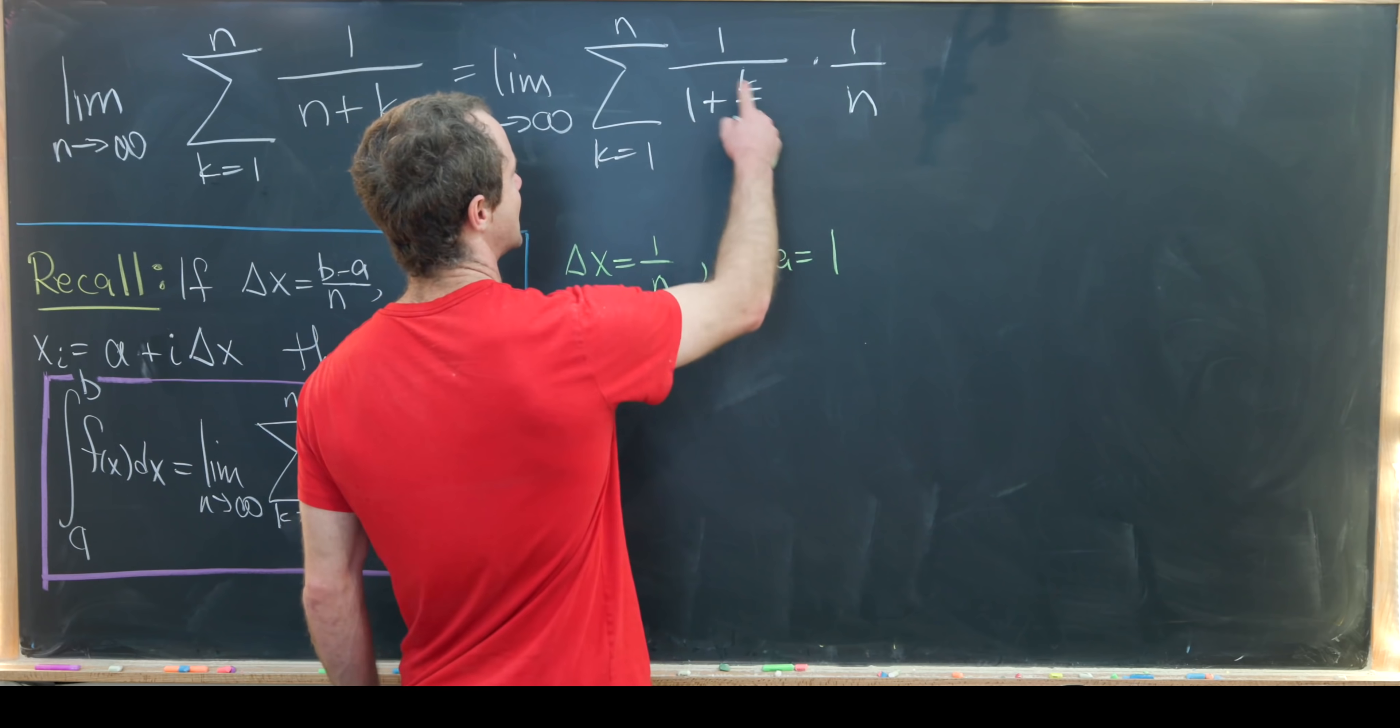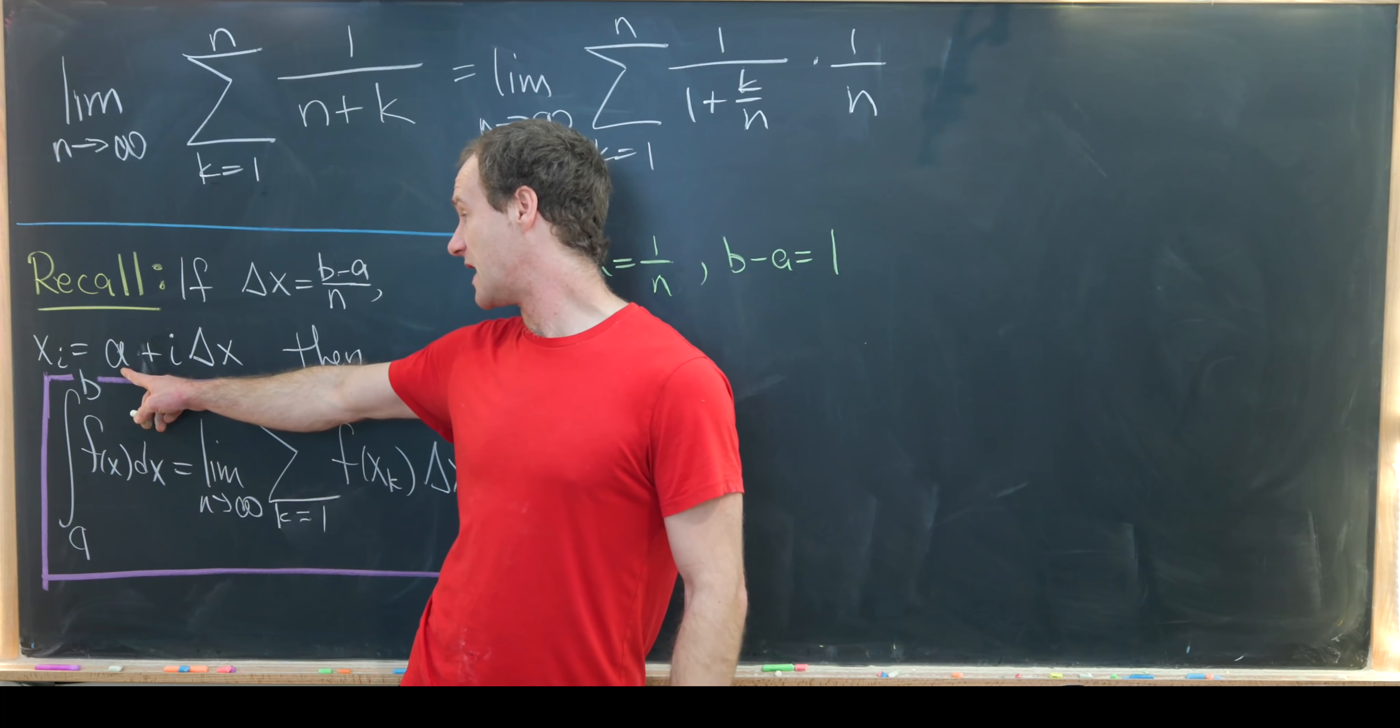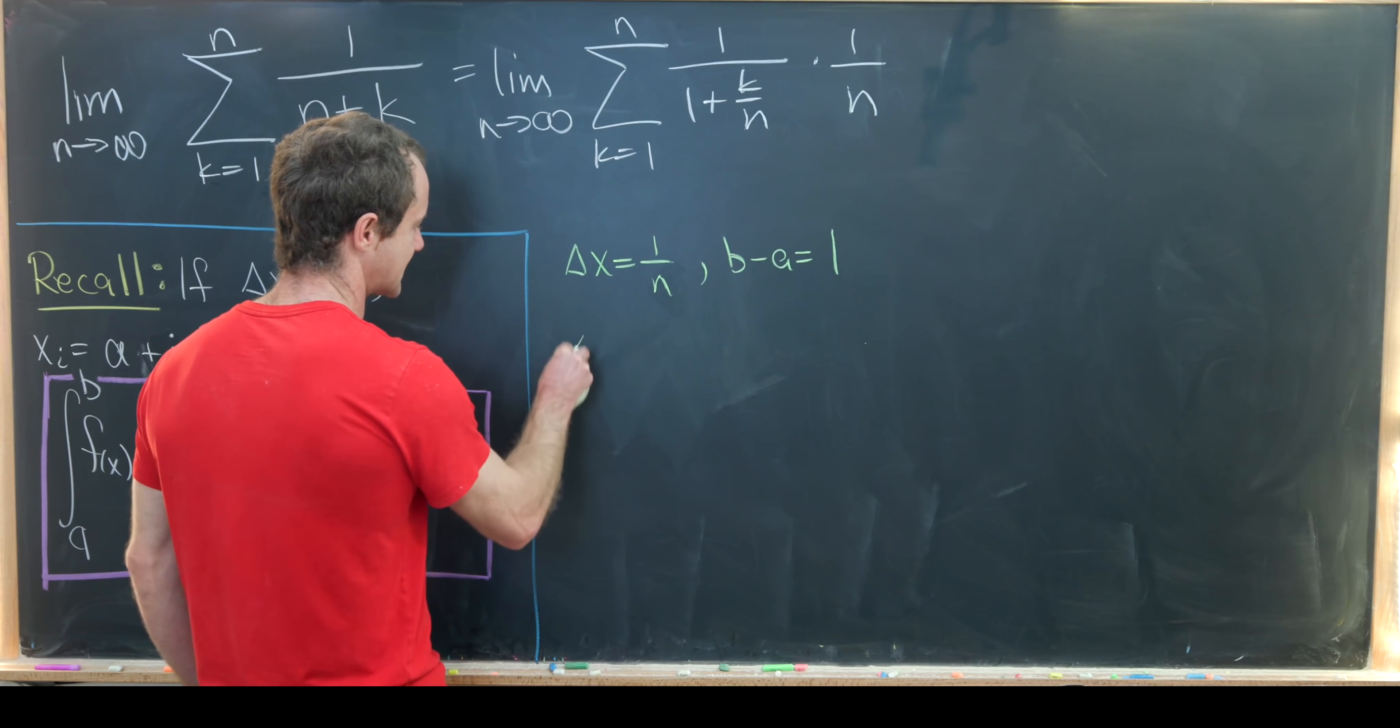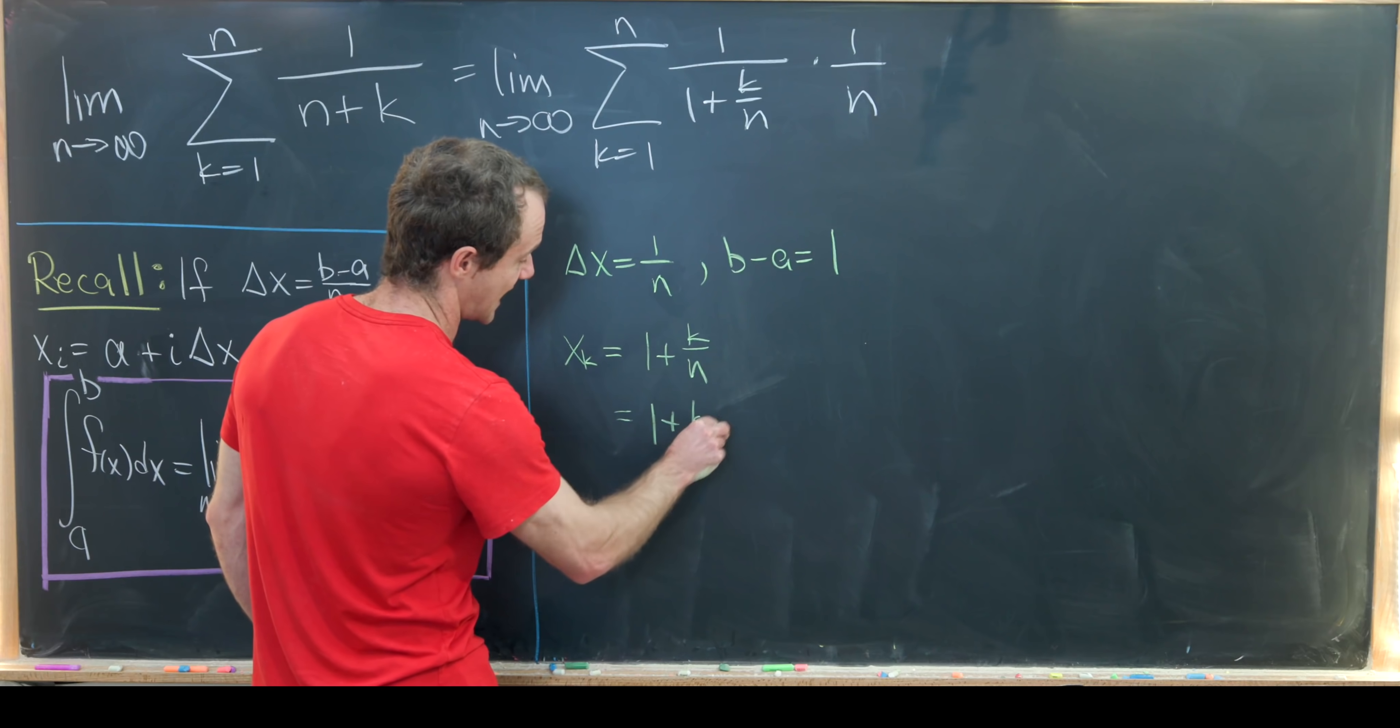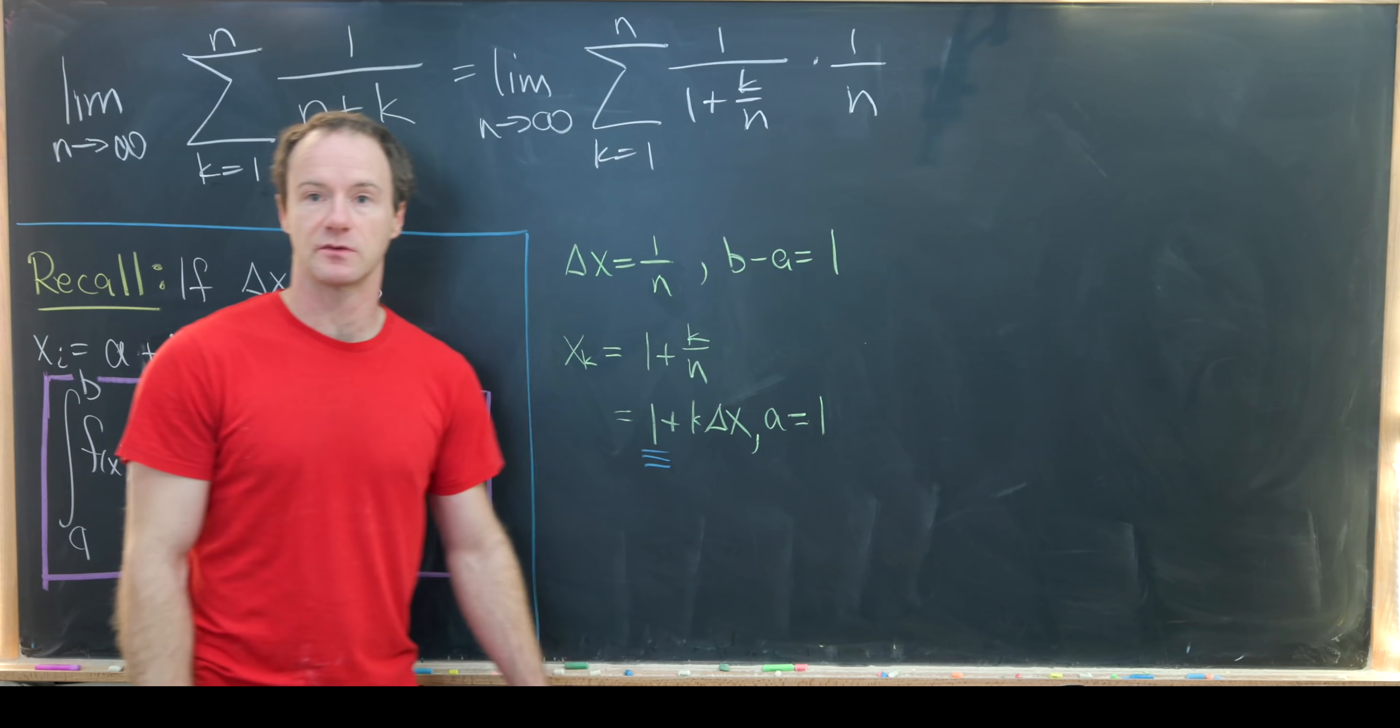Now let's look at this denominator here. We have 1 plus k over n. So that looks a lot like what we have here. Maybe a could be equal to 1. Then we have a plus k times delta x in this case. So x sub k is equal to 1 plus k over n. Notice that that is 1 plus k times delta x. But in turn that means that a is 1, just like reading off who's playing the role of this term here.